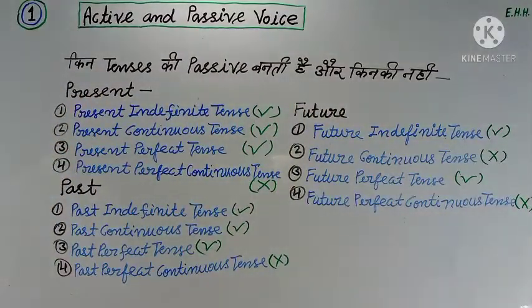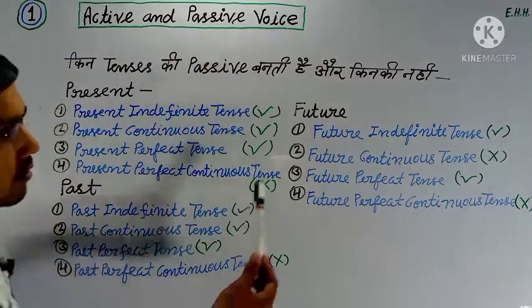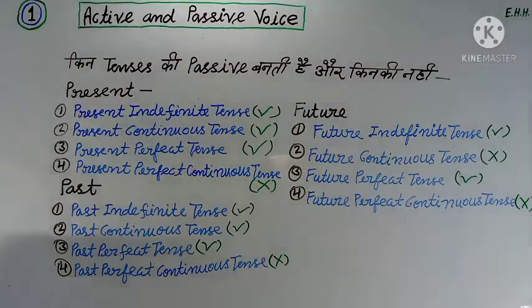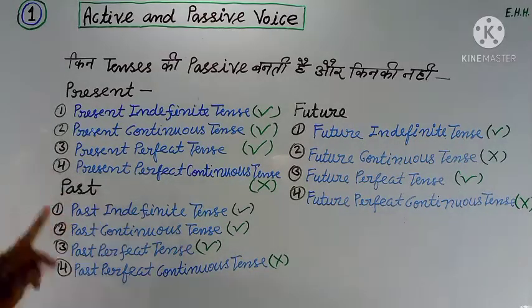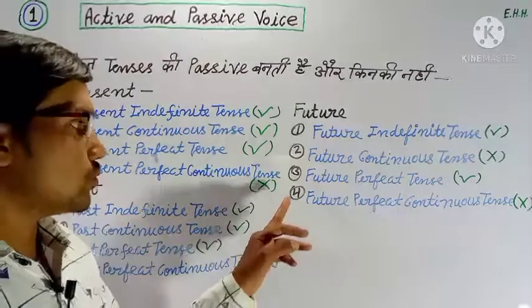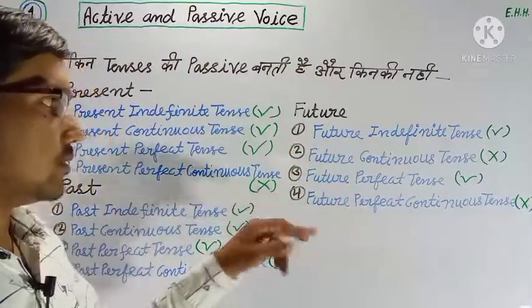So 8 tenses form passive voice. To remember which ones: 1, 2, 3 / 1, 2, 3 / 1, 3. That means Present and Past — 1st, 2nd, 3rd form passive (not 4th); Future — 1st and 3rd form passive (not 2nd and 4th).